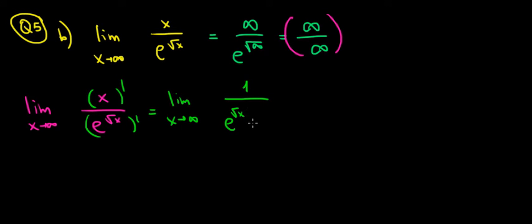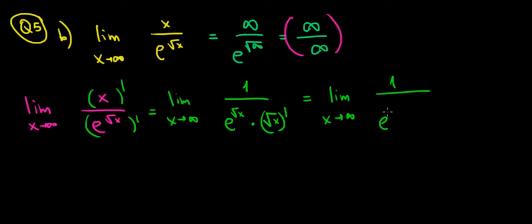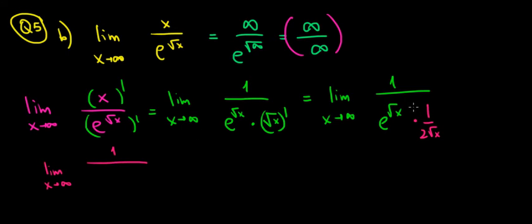We have e to the power square root of x. But it's not just e to the power of x — it's an expression of x, square root of x — so we have to use the chain rule. We take the derivative of the power itself. So we have the limit x approaching infinity: 1 divided by e to the power square root of x, and the derivative of square root of x is 1 over 2 square root of x. So this is times 1 over 2 square root of x. Let's write this as a fraction: e to the power square root of x over 2 square root of x.